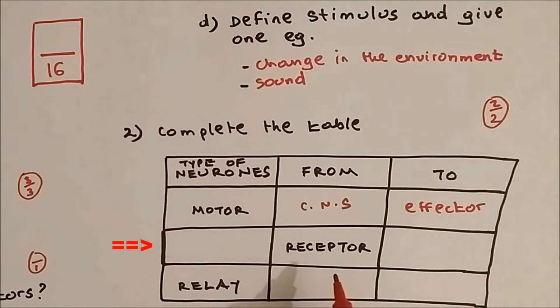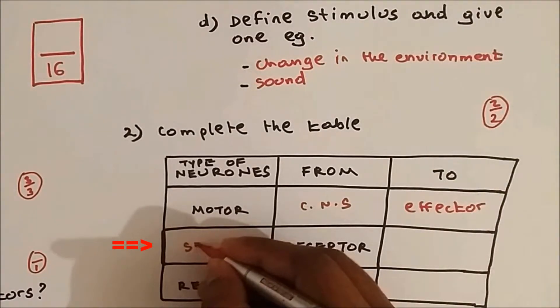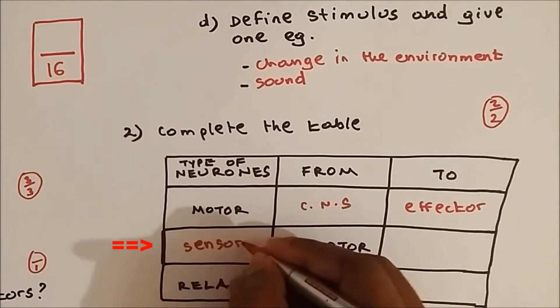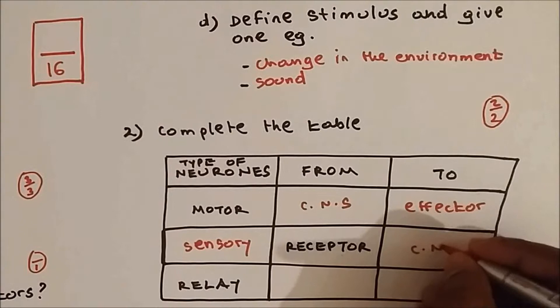We have receptor. What neurons carry electrical impulse from the receptor? That is sensory neuron. Sensory neuron carries electrical impulse from the receptor to the central nervous system.